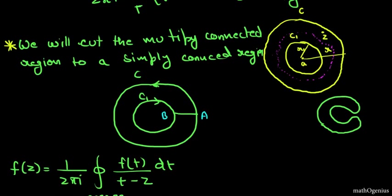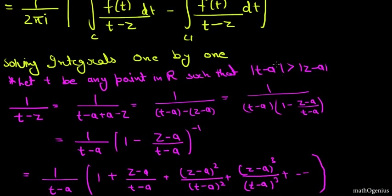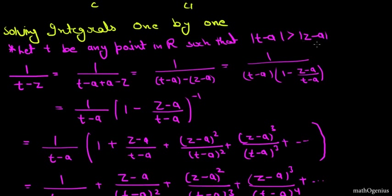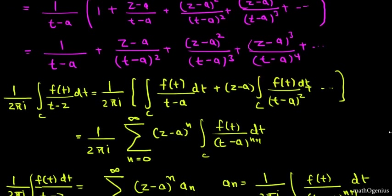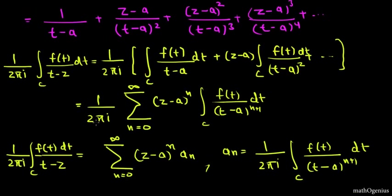For curve C, the modulus of (t minus a) is greater than the modulus of (z minus a), so we take (t minus a) outside and apply the binomial expansion on the remaining bracketed term — exactly as done in the Taylor series. For curve C1, the situation will be the opposite, so take care of that.